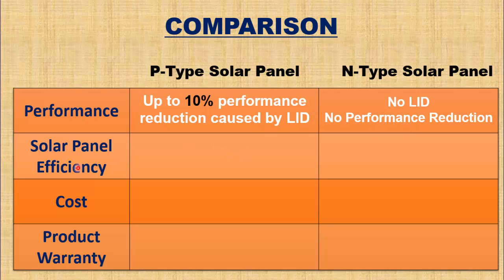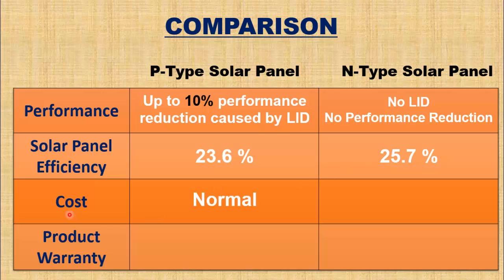The next difference is based on efficiency. The maximum efficiency of a P-type solar panel is 23.6%, whereas N-type solar panels are more efficient with an efficiency up to 25.7%. N-type solar panels are also slightly more costly as compared to P-type solar panels.